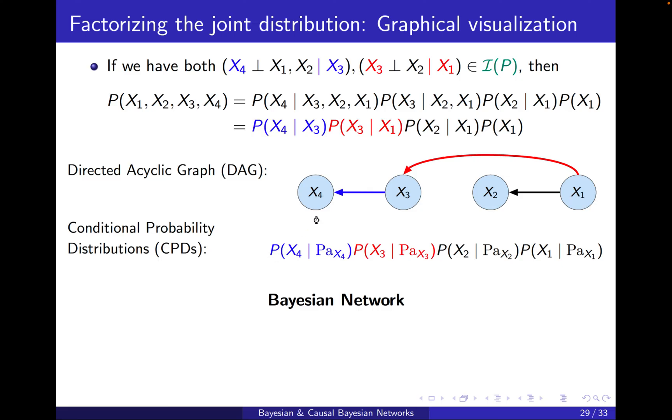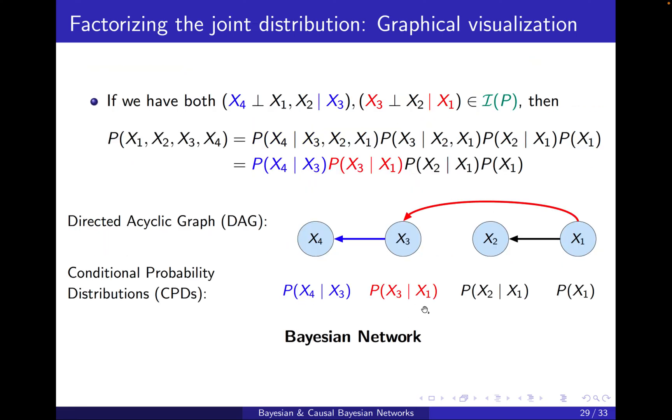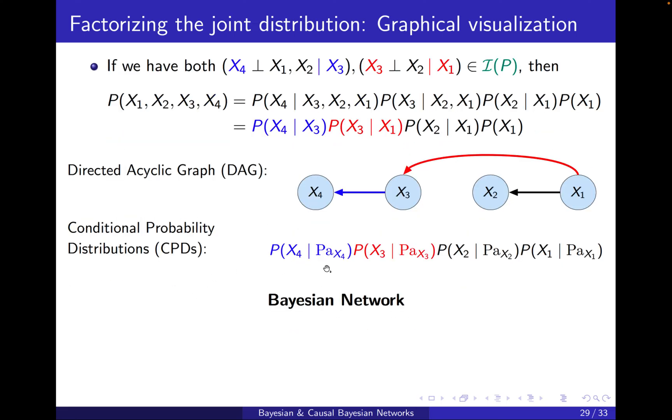I can replace the previous expression with x4 being conditioned on the parents of x4 and so on. And then the joint distribution can be simply written in the compact form of P(xi | parents of xi).